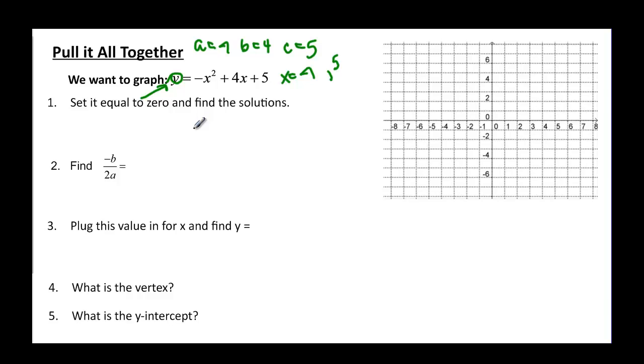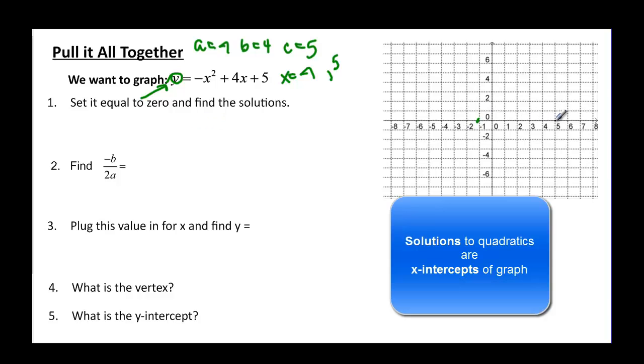So, where do those go on my graph? X equal negative 1 and x equal positive 5. So now I already have two points on my graph as I'm trying to graph this thing.